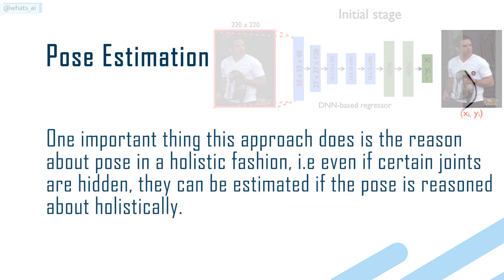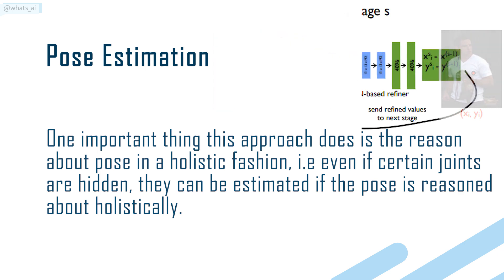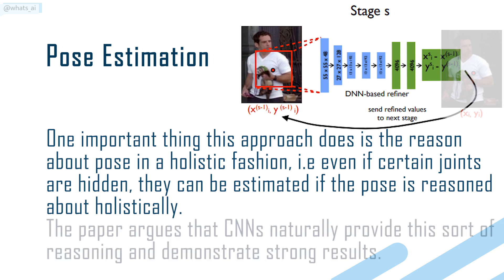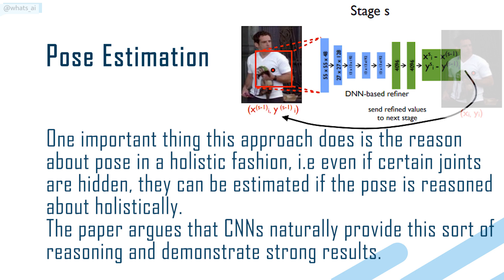One important thing this approach does is reason about pose in a holistic fashion — i.e., even if certain joints are hidden, they can be estimated if the pose is reasoned about holistically. The paper argues that CNNs naturally provide this sort of reasoning and demonstrates strong results.